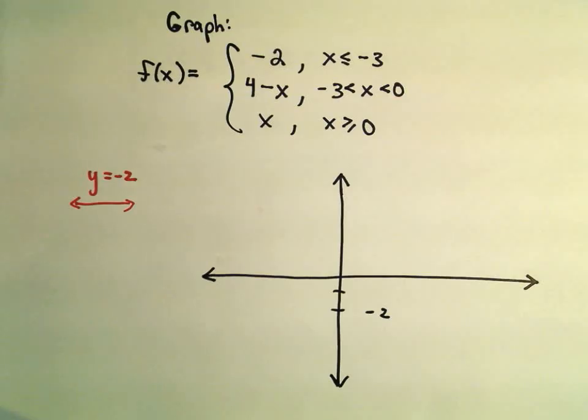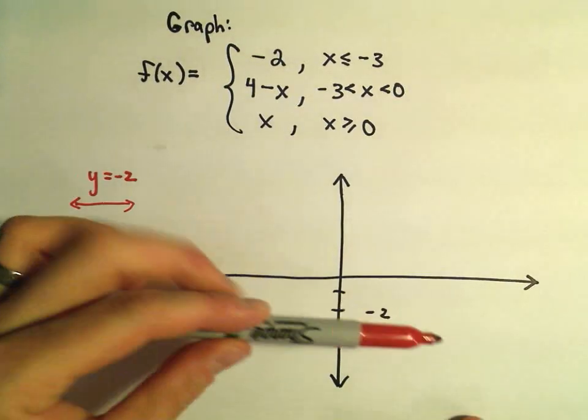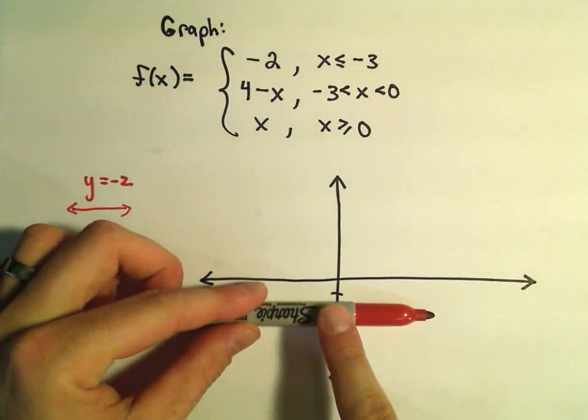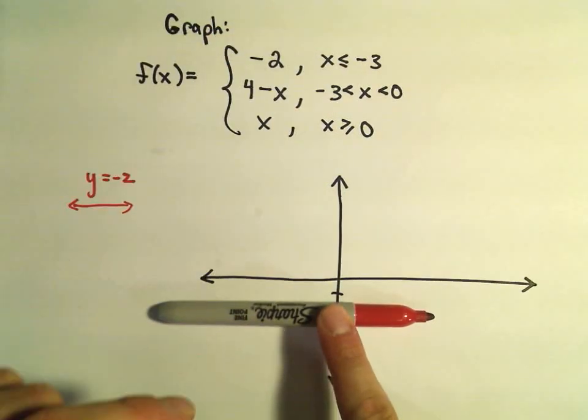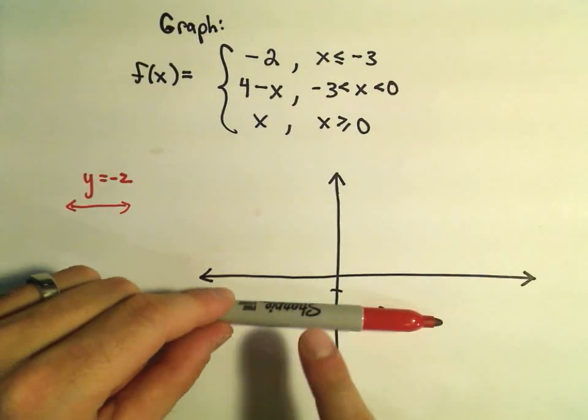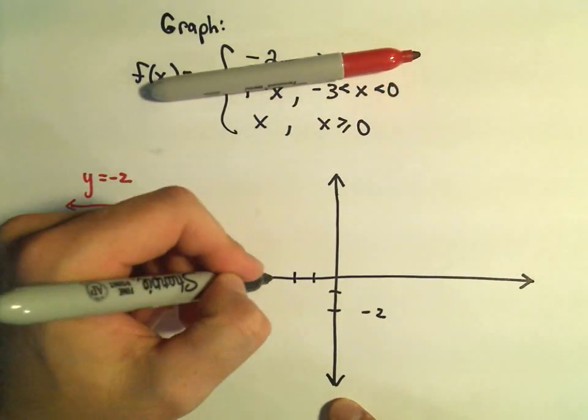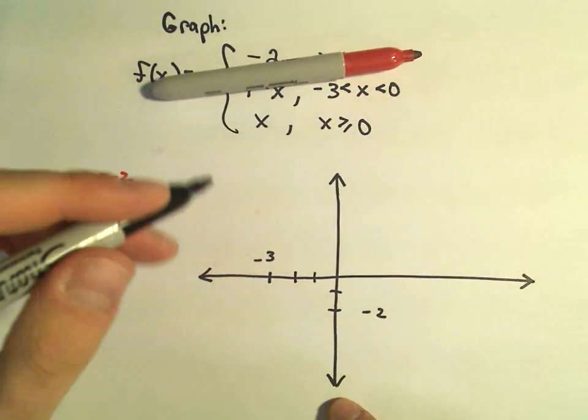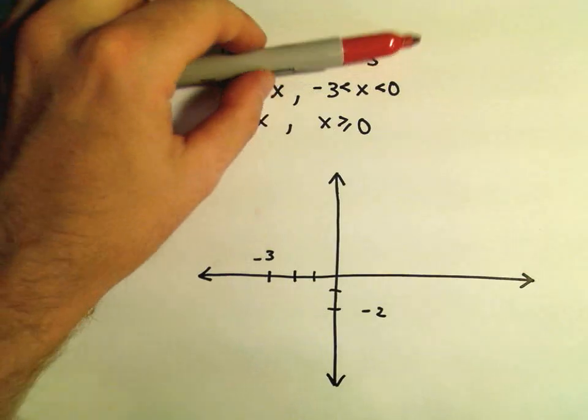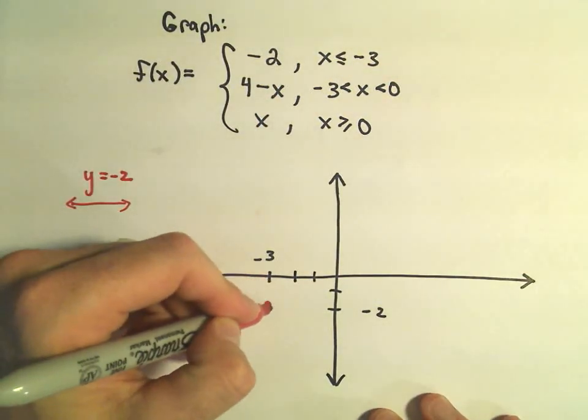But it says it only looks like this line y equals negative 2 for x coordinates that are less than or equal to negative 3. So it looks like that line, but we don't get the whole line. Negative 1, negative 2, negative 3. It only looks like that for x coordinates starting at negative 3.